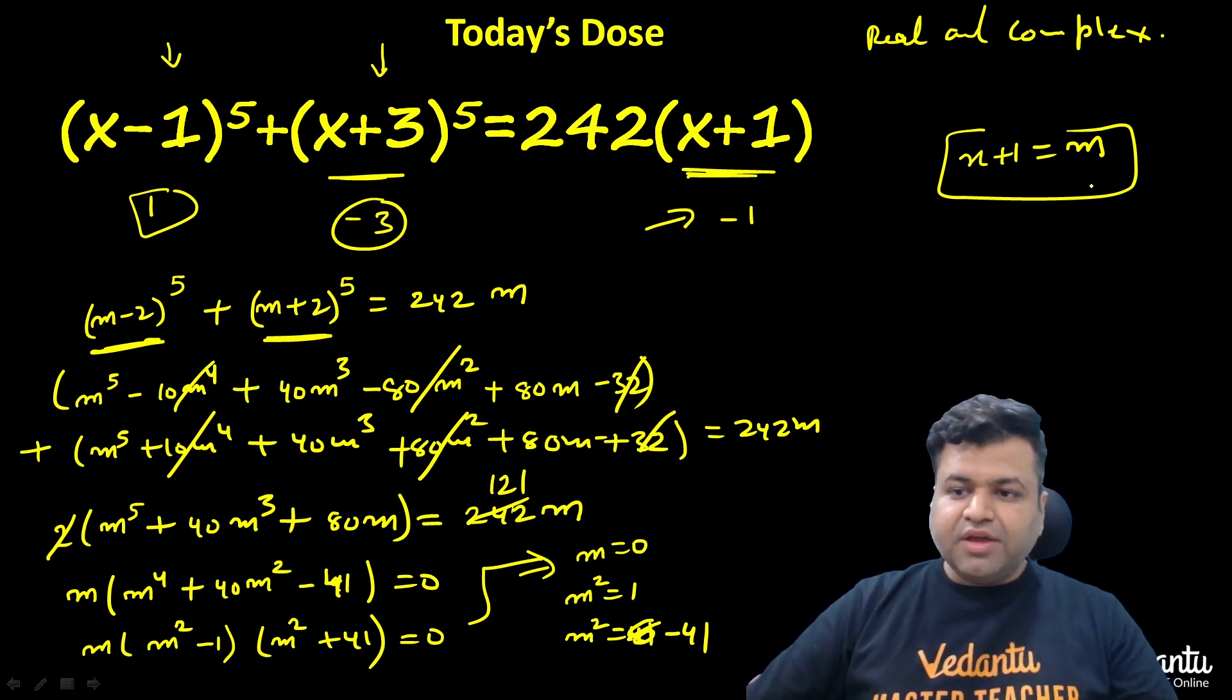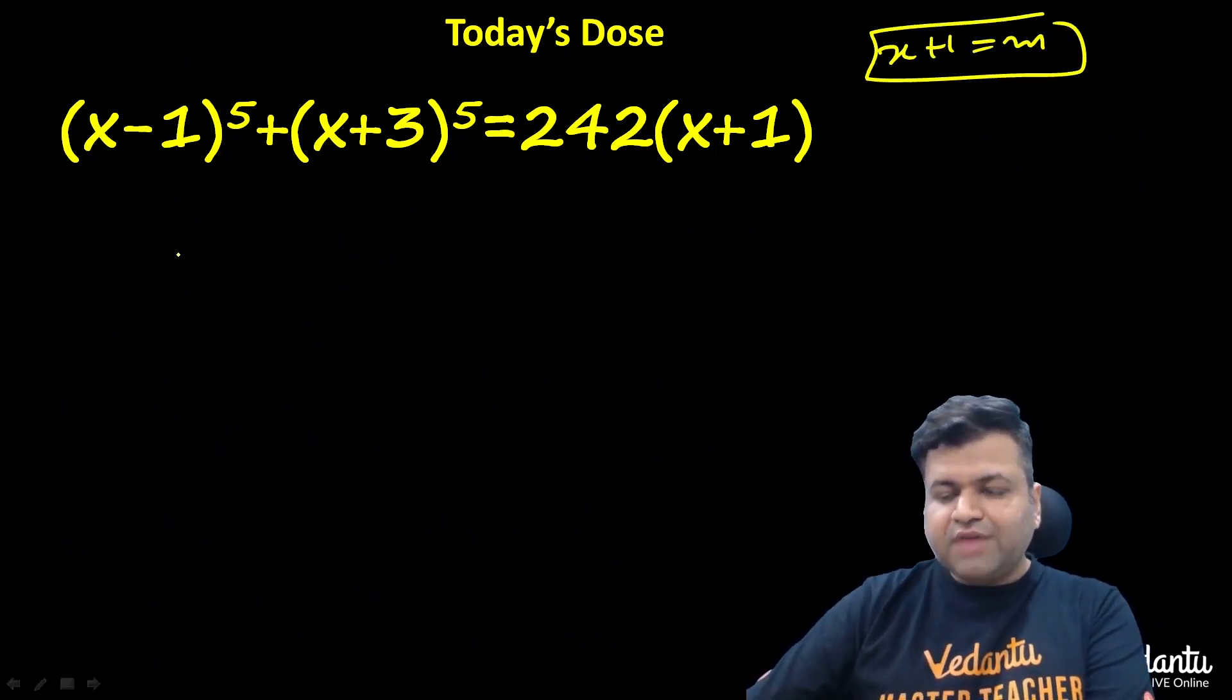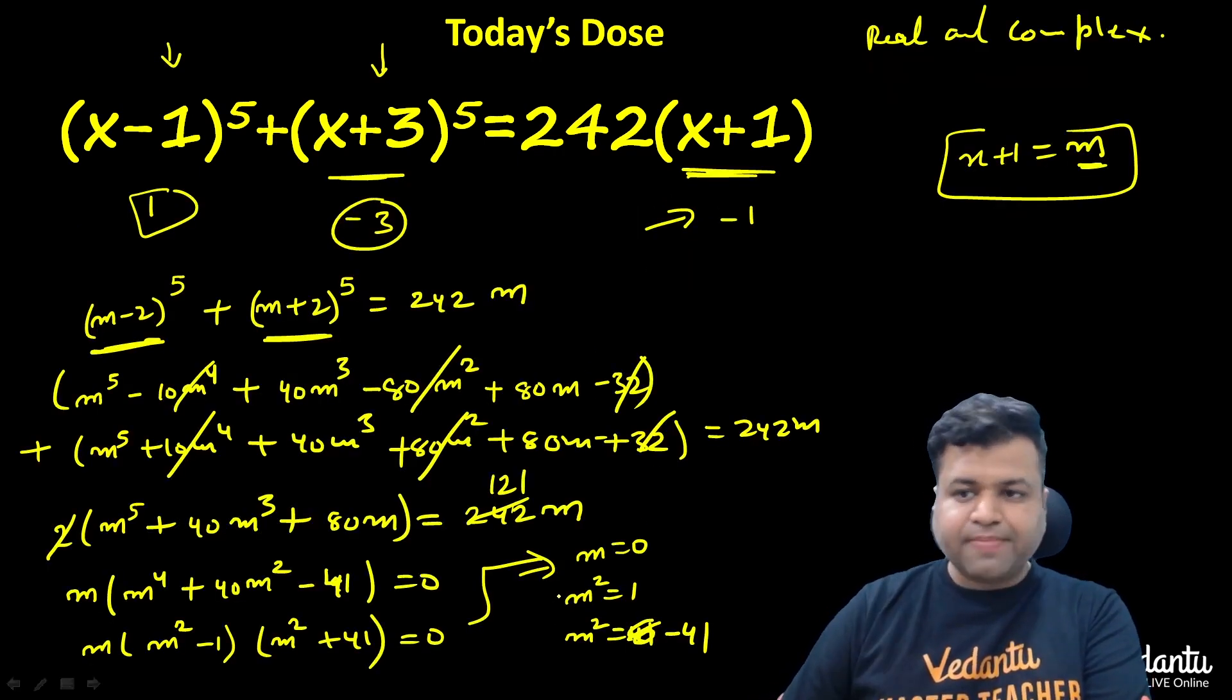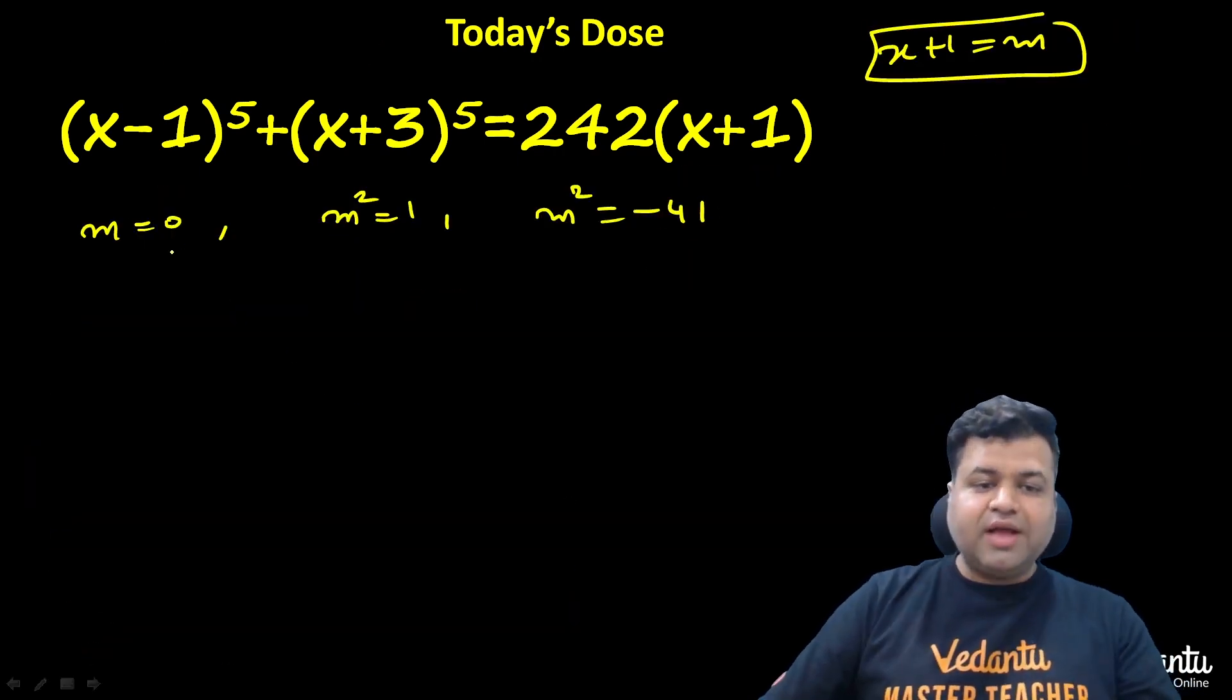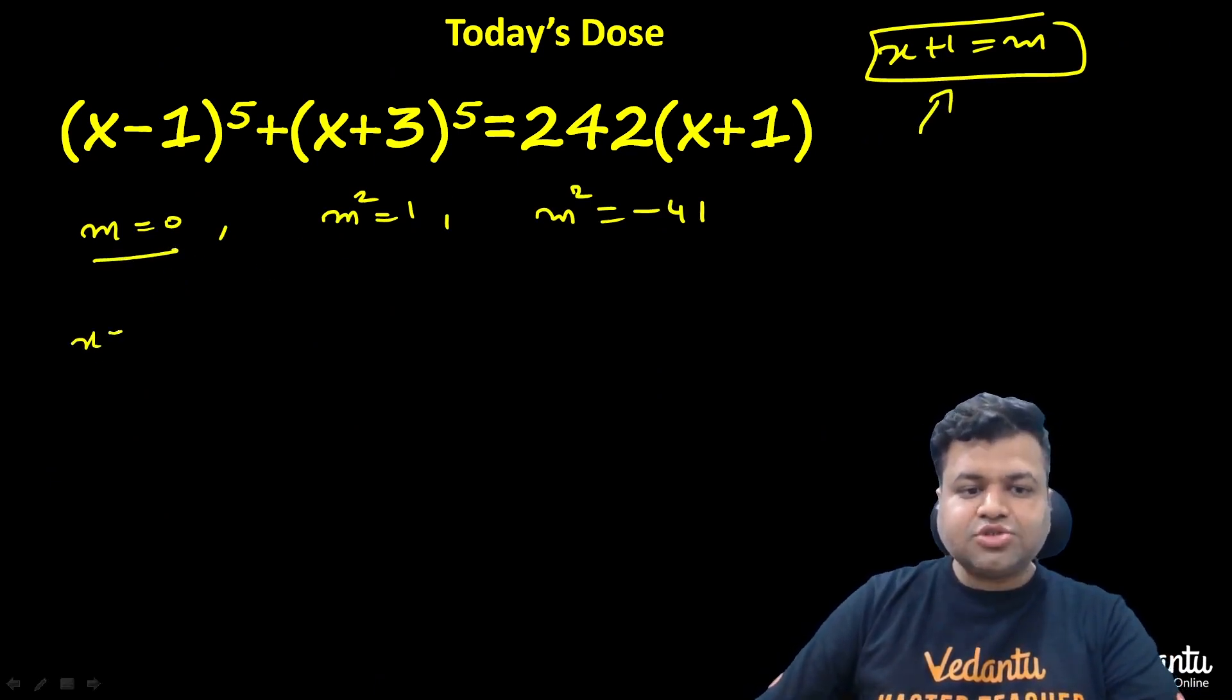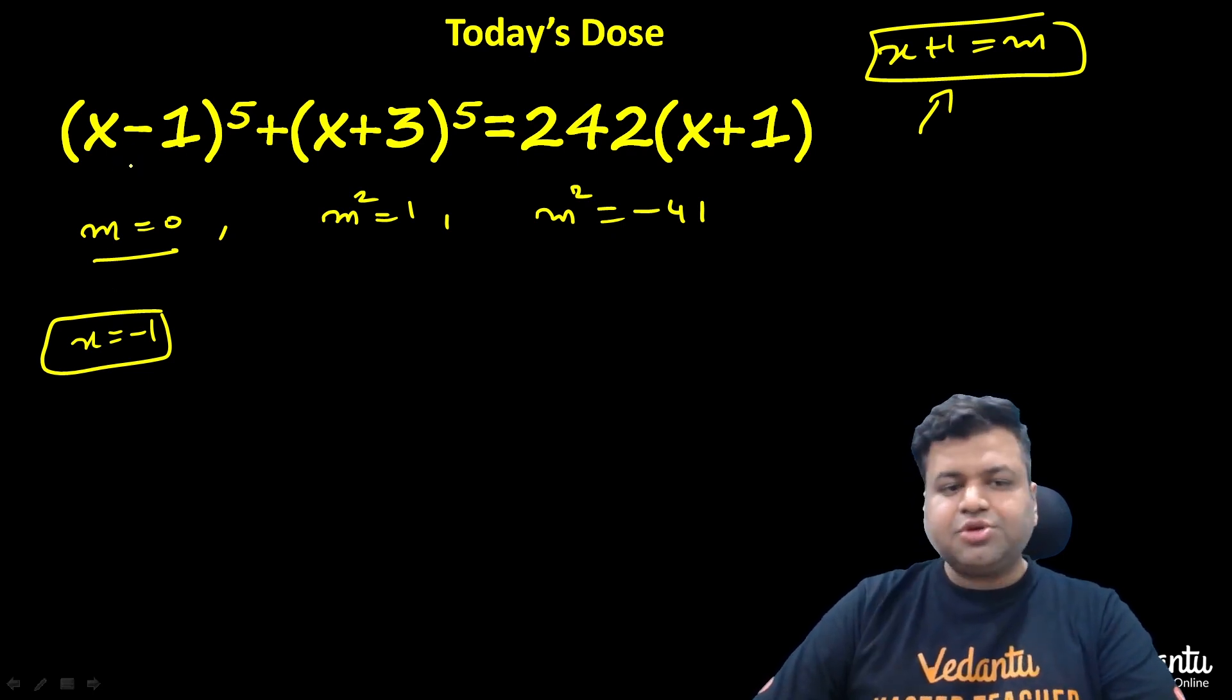Now let's talk about solutions. We have x plus 1 equals m, and we obtained either m is 0, or m^2 equals 1, or m^2 equals minus 41. If m is 0, then x equals minus 1. This is one of the solutions. You can substitute in the original equation and check. This will be minus 2 raised to power 5, plus 2 raised to power 5, and this is 0.